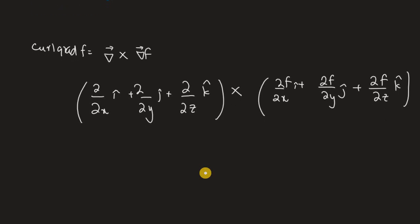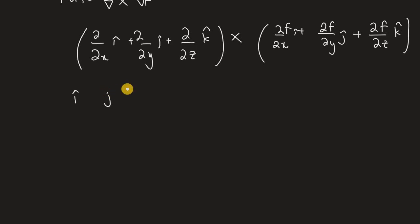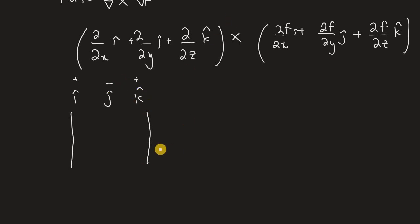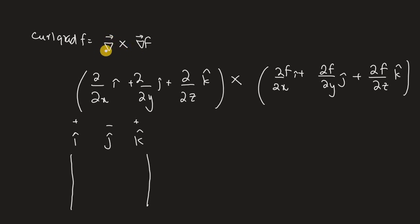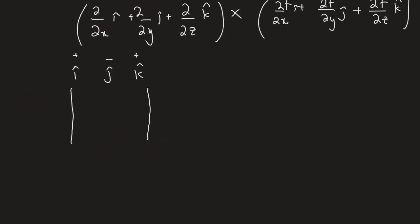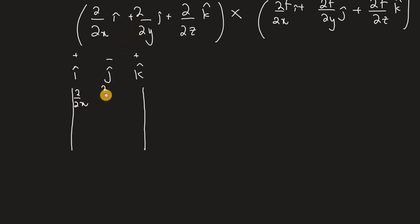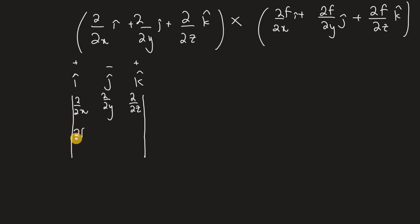Now let's do this cross product. To find the cross product, you write i, j, k in the first row — positive, negative, positive. Remember, order matters a lot in cross product. Since we're doing gradient times gradient of f, we write the gradient first in the second row, then gradient of f in the third row. So the second row is: ∂/∂x, ∂/∂y, ∂/∂z, and the third row is: ∂f/∂x, ∂f/∂y, ∂f/∂z.